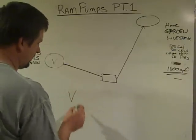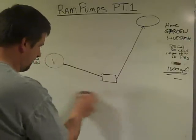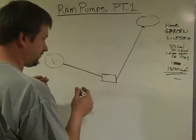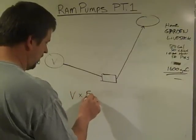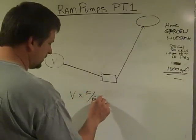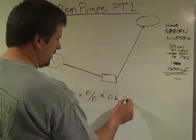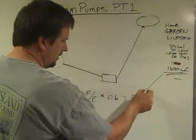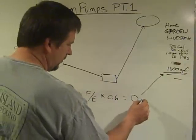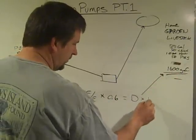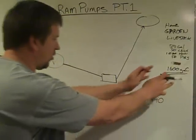And the formula is volume times the fall divided by the elevation times the efficiency. And for most standard ram, I'm going to just use 60% and that'll give me my D and that's the gallons delivered per minute. If I want to know my gallons per day, based on what I need, I multiply by 1,440 and that'll give me my gallons per minute. So I can work this all backwards.